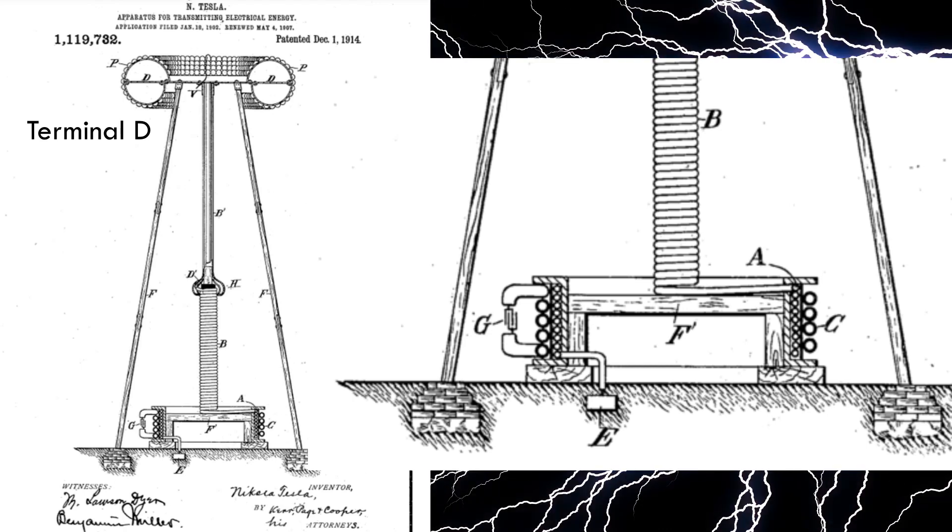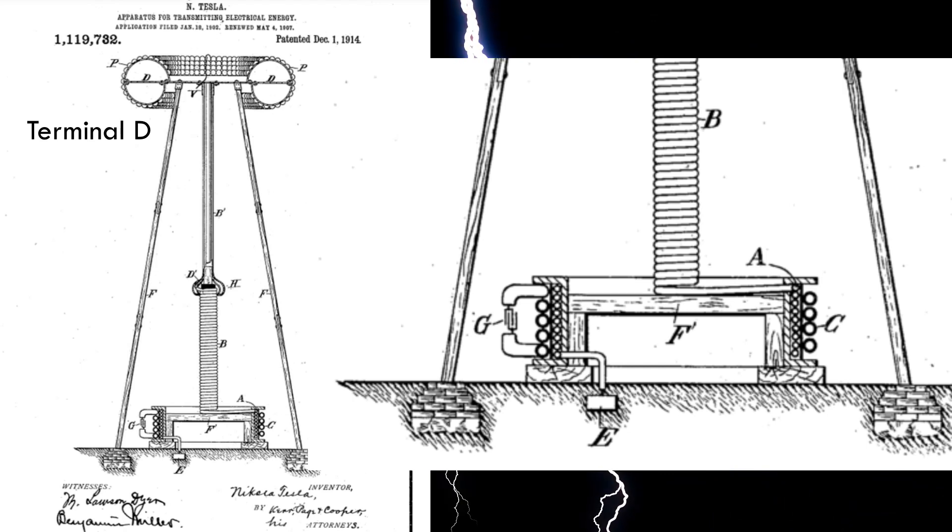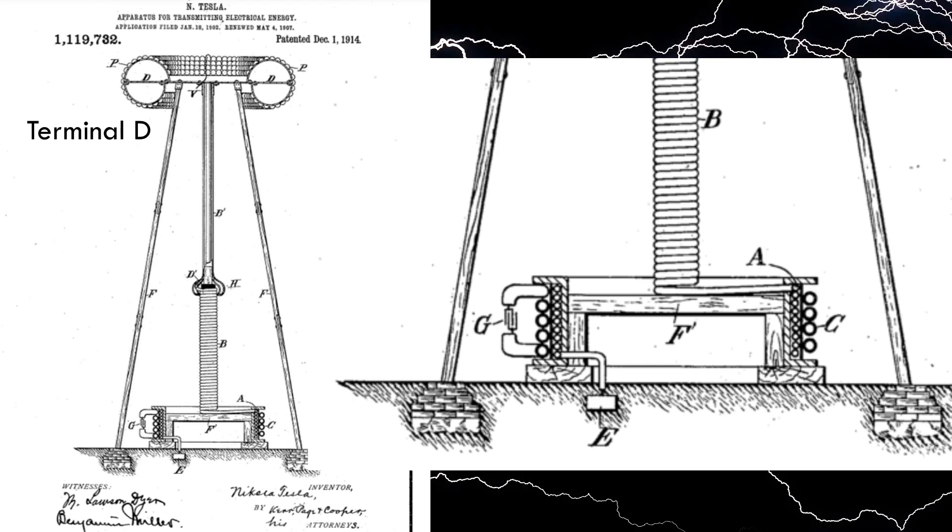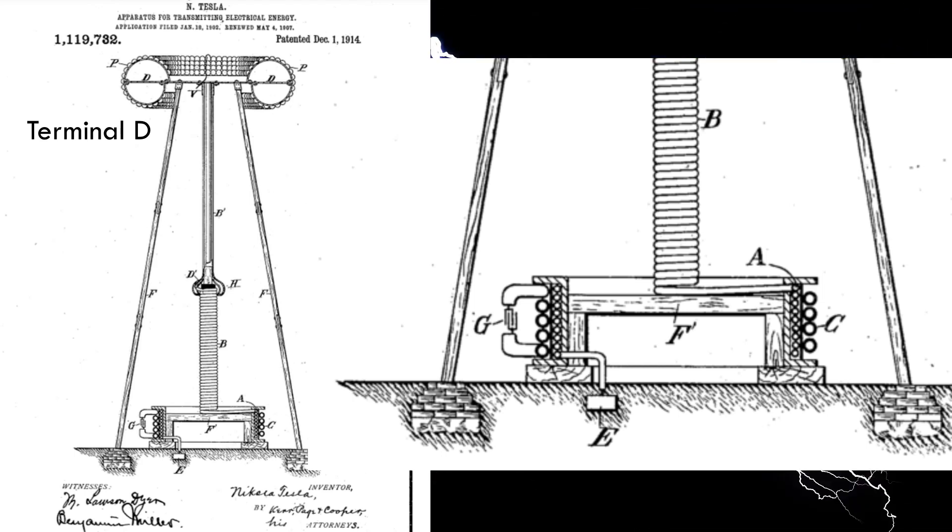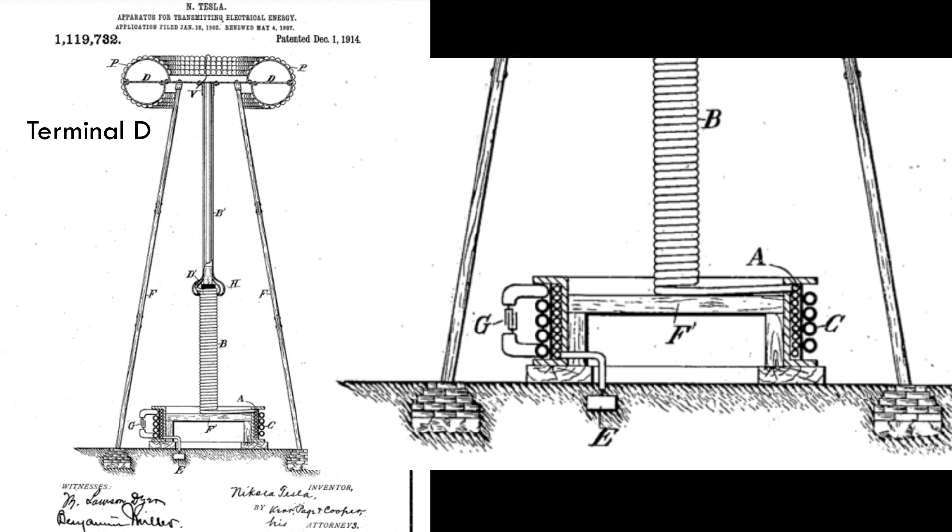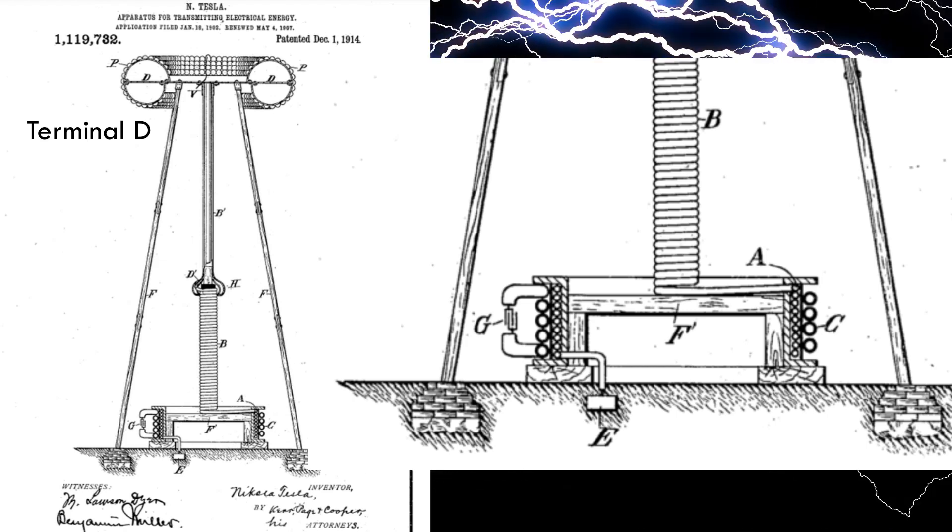3. In a plant for the transmission of electrical energy without wires, in combination with a primary or exciting circuit, a secondary connected to the ground and to an elevated terminal, and having its outer conducting boundaries, which are charged to a high potential, arranged in surfaces of large radii of curvature, for the purposes of preventing leakage and loss of energy, substantially as set forth.